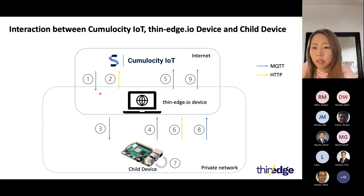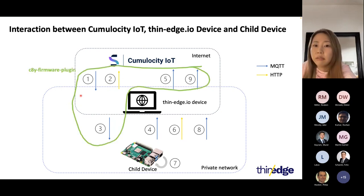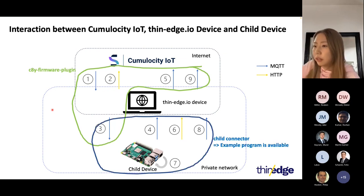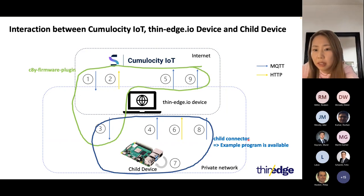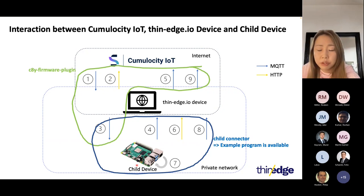As per the firmware operation, we need a couple of steps between these three components. We can divide the arrows in the diagram into two parts. The first part is the responsibility of the CHY firmware plugin, which we deliver in the 0.10 release and is supposed to run on the thin-edge device. The other part is the responsibility of the child connector, which should be running on the child devices. It is not part of thin-edge IO itself because it's totally different per device how you can install the firmware. But don't worry — we have an example program in our GitHub repository. I'm going to use the example Python script available in the example repository in today's demo.